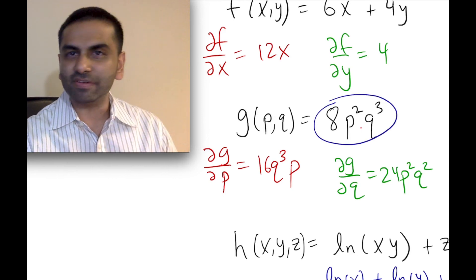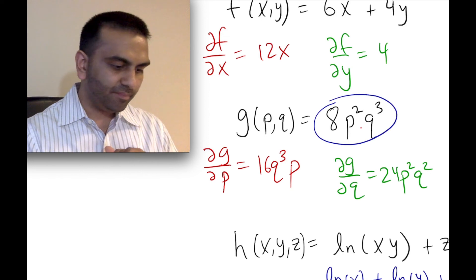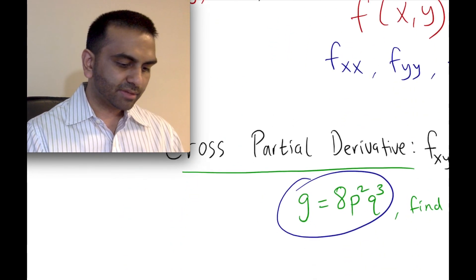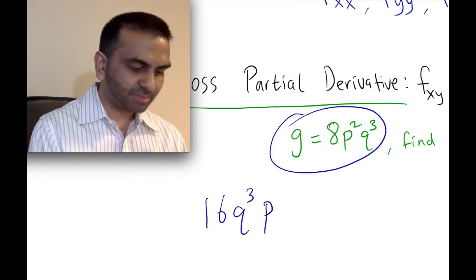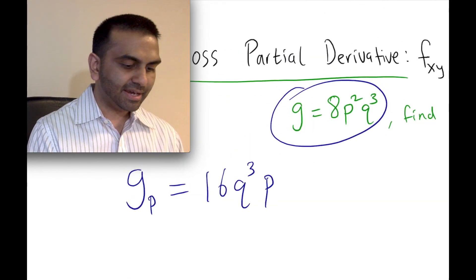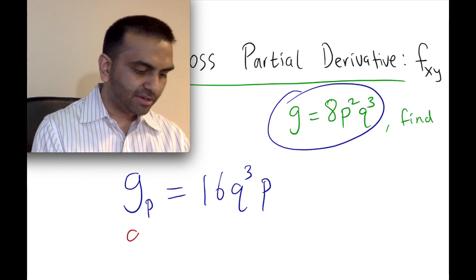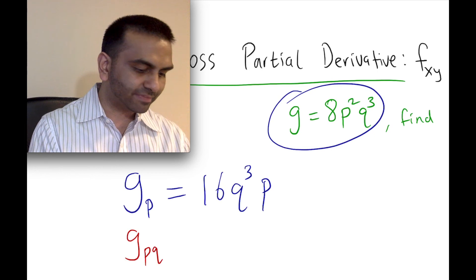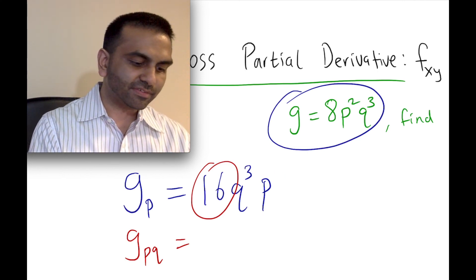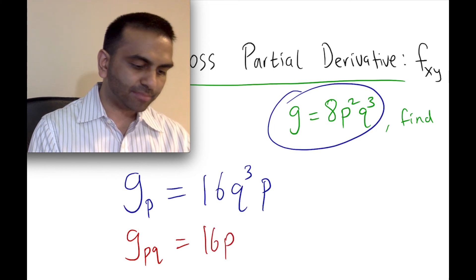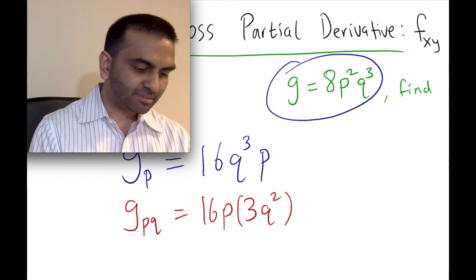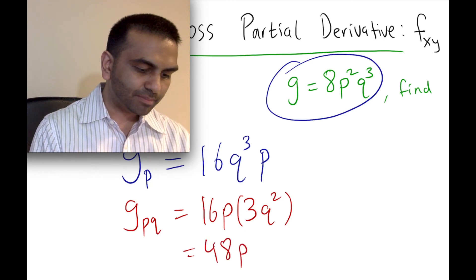First, taking the derivative with respect to p gives us 16q³p, as found earlier. Now taking the derivative of 16q³p with respect to q: treat 16 and p as constants, so we have 16p times the derivative of q³. The derivative of q³ is 3q², so we get 16p times 3q², which simplifies to 48pq².